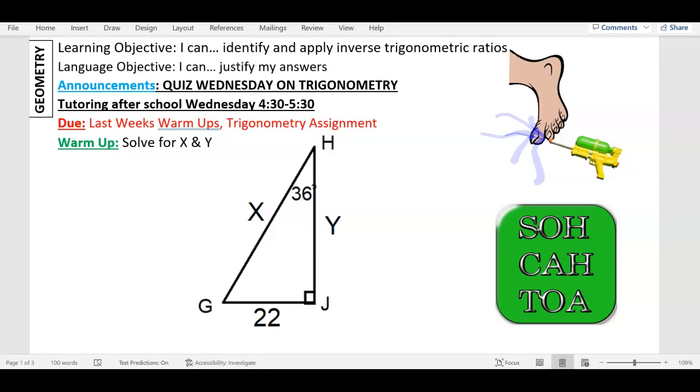Make sure you turn that in, okay? Now, the warm-up is based on that same stuff. The angle I'm given is 36, so always start at the angle they give you. Put an arc there, okay? You want to label O, H, A, okay?